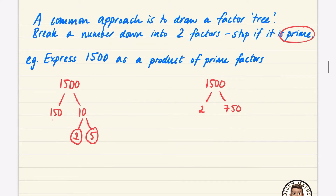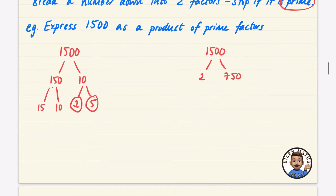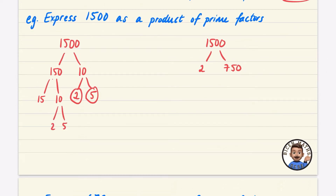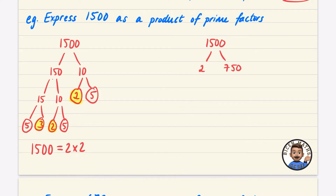I split 150 into 10 × 15. The 10 breaks into 2 and 5 — both prime, so I circle them. The 15 breaks into 5 and 3 — both prime. Collecting all circled primes from 1500: two 2s, one 3, and three 5s. So 1500 = 2² × 3 × 5³, writing the numbers in ascending order.